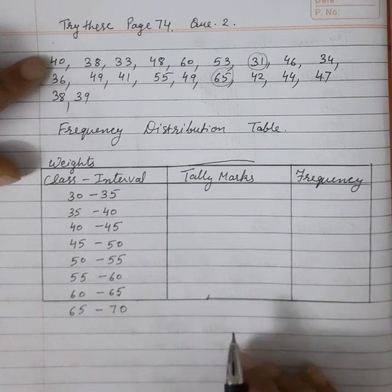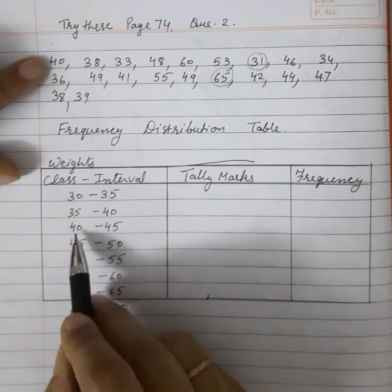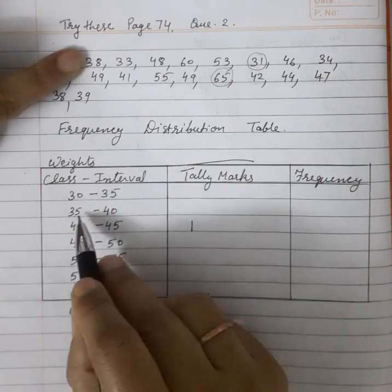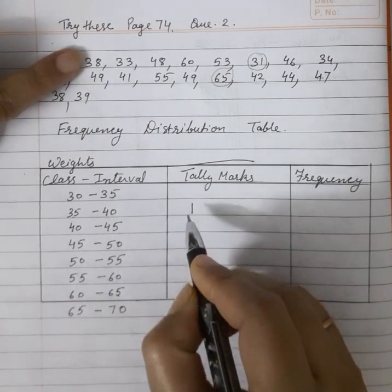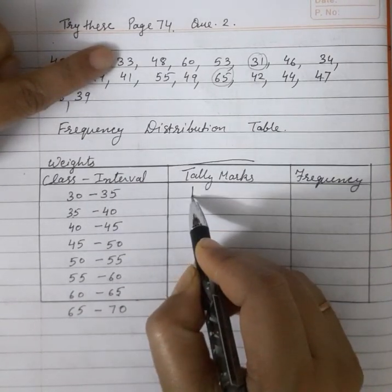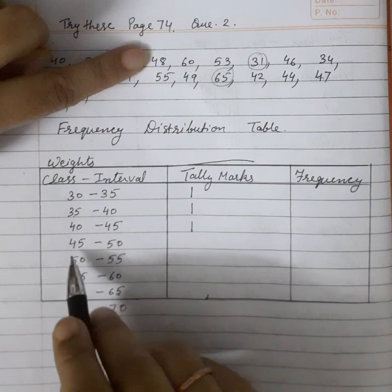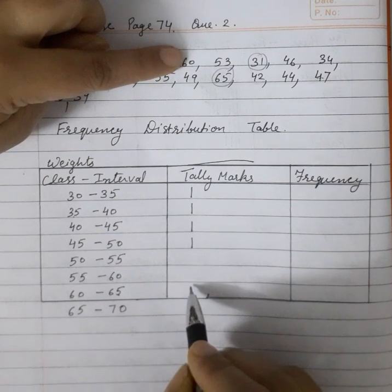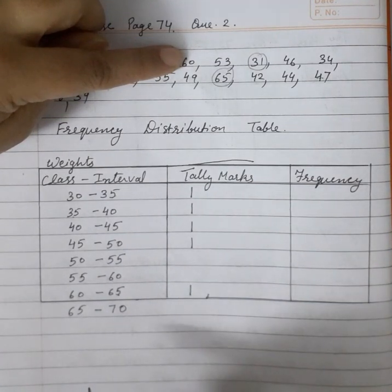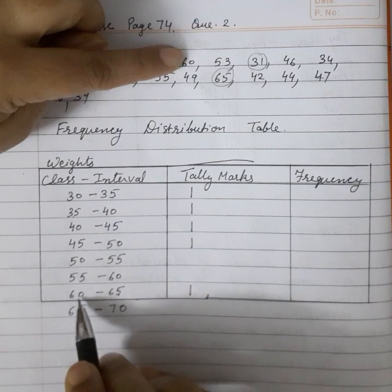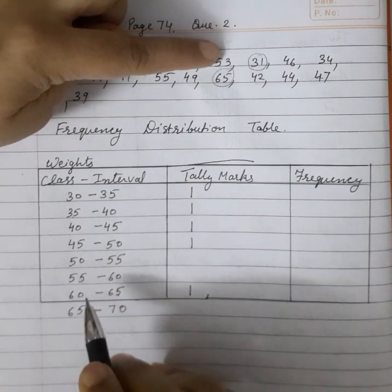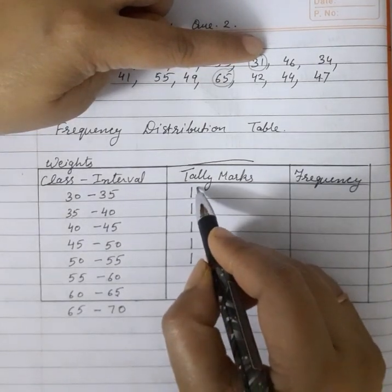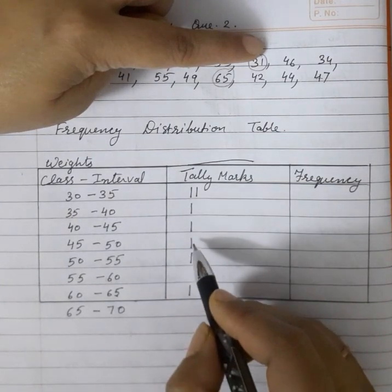Now we will find the tally marks, going number by number. The first number is 40 — 40 comes in the class interval 40 to 45, so one tally goes there. The next is 38, which comes in 35 to 40. Next is 33, which comes between 30 and 35. Then 48 comes between 45 and 50. Then 60 comes in 60 to 65 — we cannot take it in the lower interval; it goes in the higher class interval. Next is 53, then 31 which comes in 30 to 35.